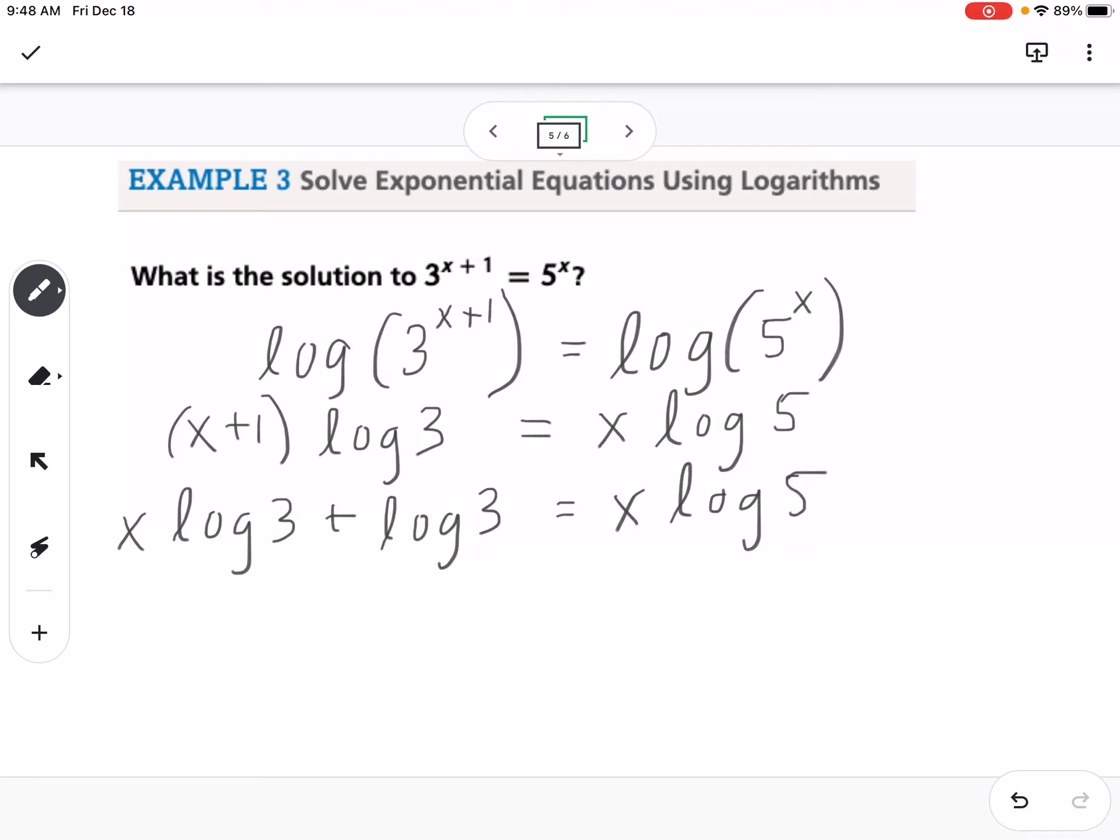Then I want to get the x's on the same side. So I'm going to subtract this one from both sides. So now I have x log of 3 minus x log of 5 plus log of 3 equals 0.